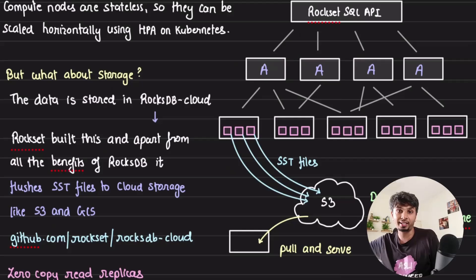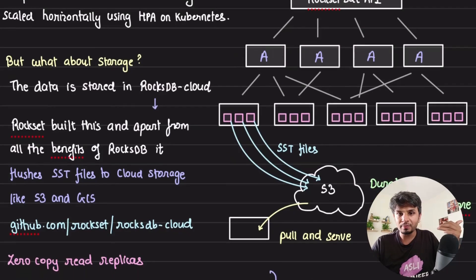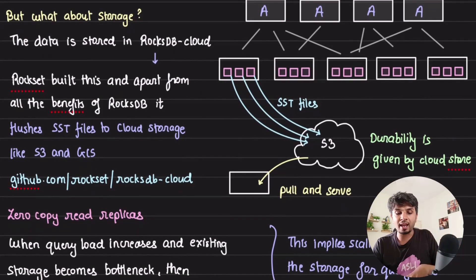There is a chance that I have a large number of aggregator nodes or compute nodes which are executing the SQL query, but it needs to talk to the leaf node to get the data. But what if the storage becomes the bottleneck? I cannot tolerate that. How can you make storage auto-scale or storage horizontally scalable?